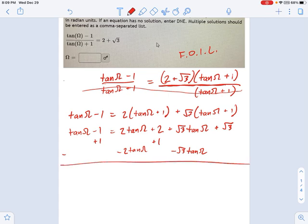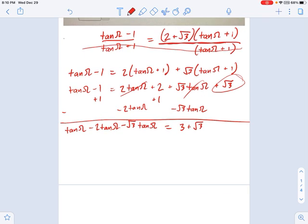What do we get? We get tan(Ω) - 2·tan(Ω) - √3·tan(Ω) equals—well, I finished those things, so all that's left on the right side is 3 + √3. 2 plus 1 makes 3, and then there's that √3 over on the end. So all I'm really doing is combining like terms. And we can still work on the left side here.